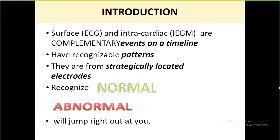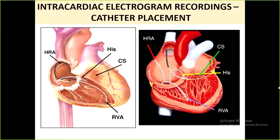The classical catheter locations for a conventional EP study are: a quadripolar (four-pole) catheter in the high right atrium, a quadripolar catheter in the right ventricular apex, another quadripolar catheter at the tricuspid annulus or membranous interventricular septum to record the His bundle, and a decapolar (ten-pole) catheter in the coronary sinus. This is the typical quadripolar catheter used in the right atrial appendage, His bundle location, or right ventricle apex — it has four poles.